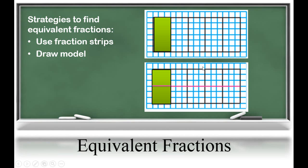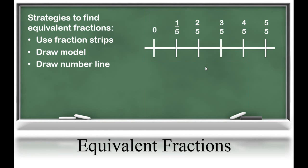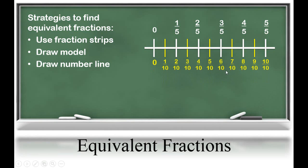It's really important for students to make sure that their models are drawn equally and that their whole is divided into equal parts. The next strategy for students to use is a number line. This follows the same method as when drawing the model. Students would draw their fifths, as shown here, then break each fifth into two equal pieces, creating tenths. Students can use this number line to show that one-fifth is equivalent to two-tenths.